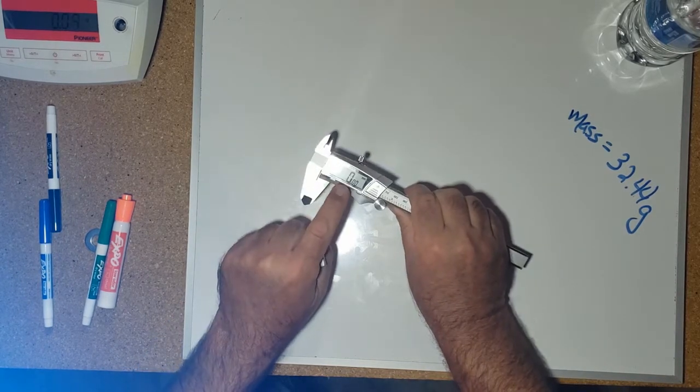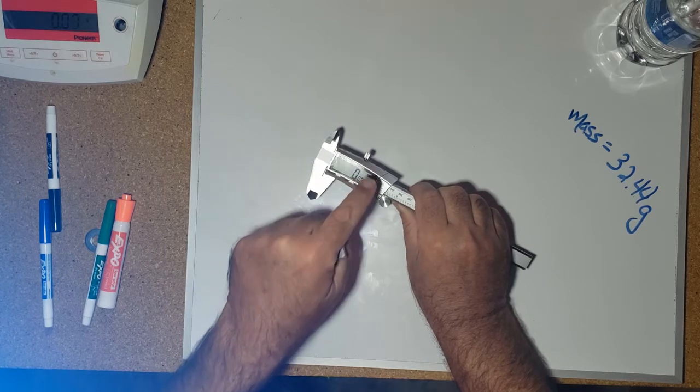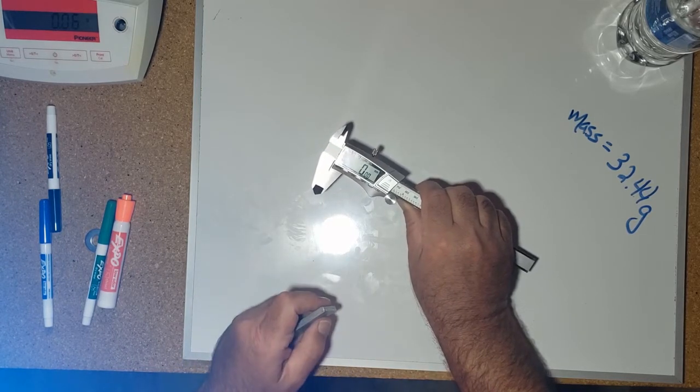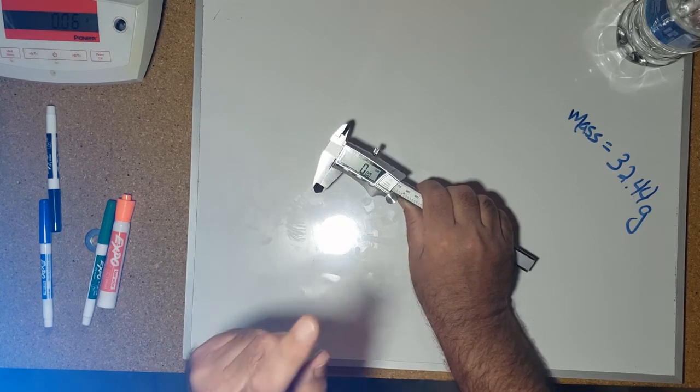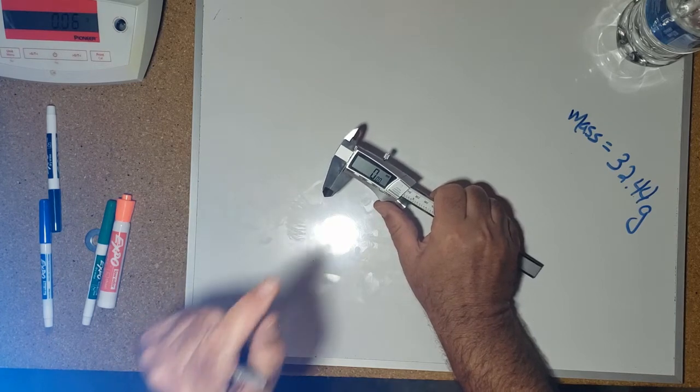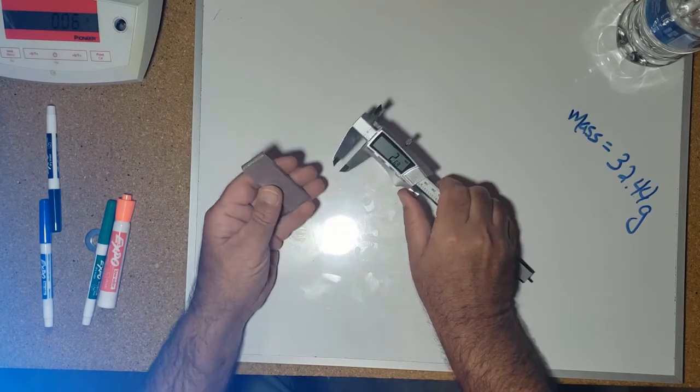Now, you guys have seen this before. This is a vernier caliper, and this measures in millimeters. I did convert them to centimeters for you last time I used it. I'm not going to do it this time. The numbers I'm going to pull off here are going to be left in millimeters. You'll have to change to centimeters.